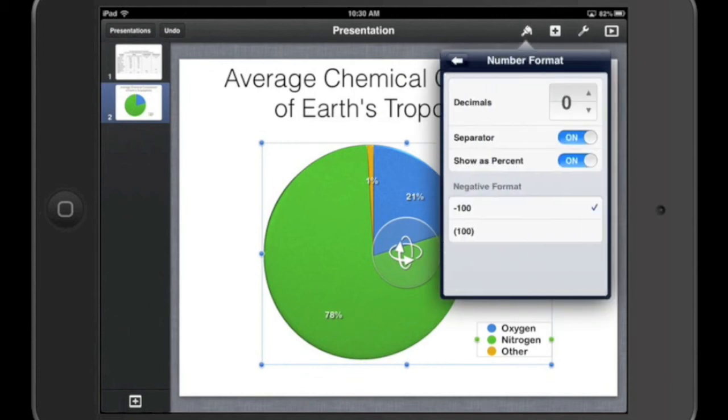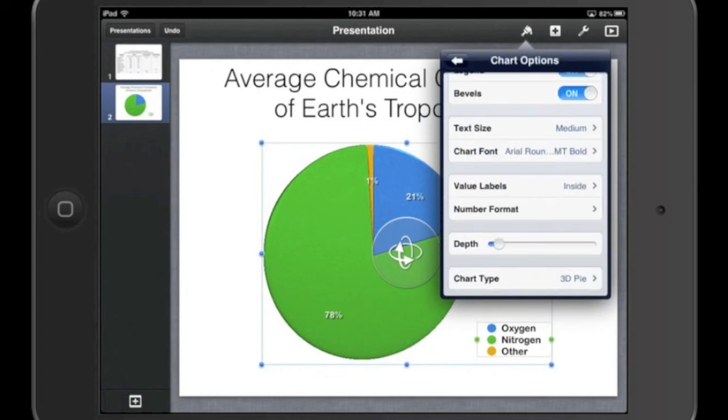Number Format. Now, on one of the other graphs I have the students do, they're dealing with decimals, and so they'd actually have to tell Keynote to include decimals up to however many places, and you can do that here. You see my numbers are getting more and more decimal places. For this particular graph, it's not necessary, but certainly it might be useful for other data.